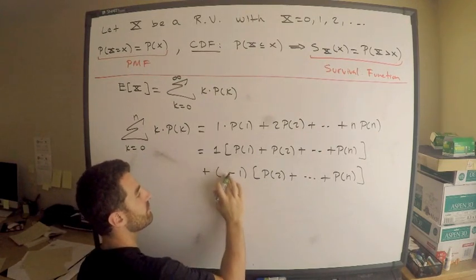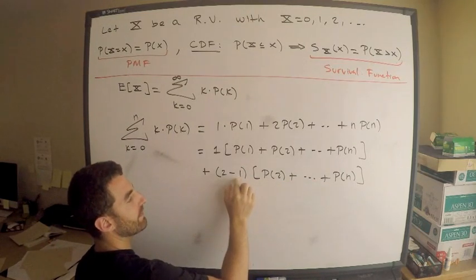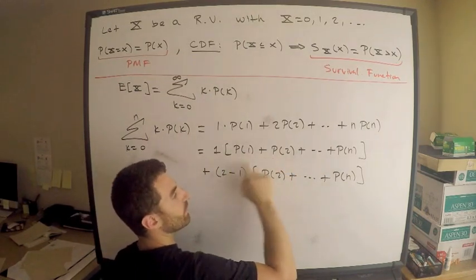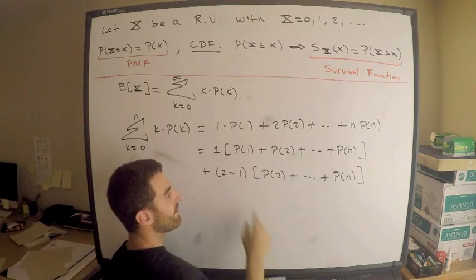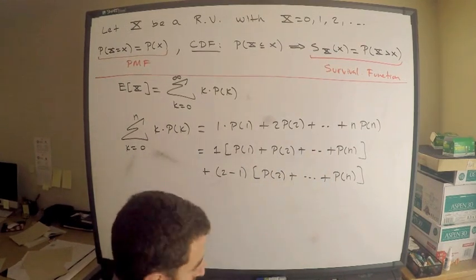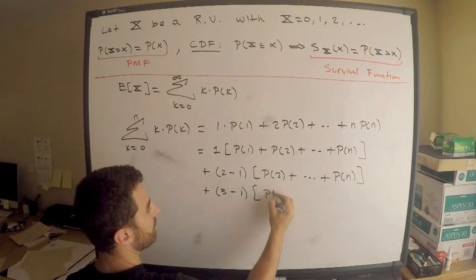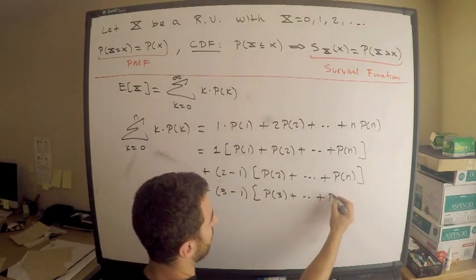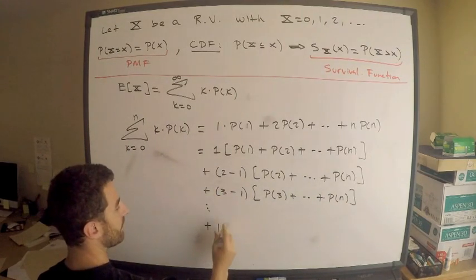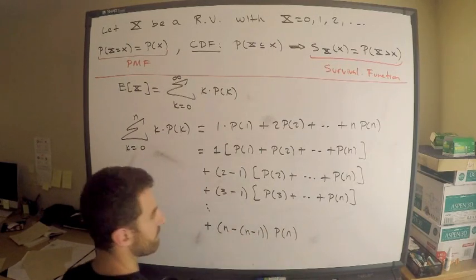Plus 2 minus 1, probability 2 plus all the way up to probability n. Take a step back, make sure you understand what I just did. This is 2 minus 1. So in other words, if I distribute this whole quantity into the negative 1, everything from the previous term cancels. 1 times probability 2, 1 times probability 3, and 1 times probability n. But now I have minus 1 times probability 2, minus 1 probability n. So those will cancel, right? I need to keep going. Plus 3 minus 1, probability 3, all the way up to probability n. Keep going.